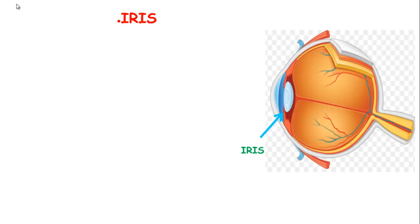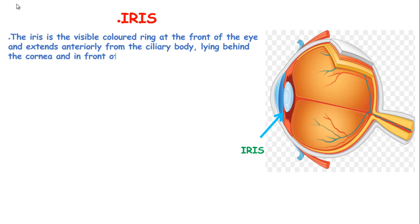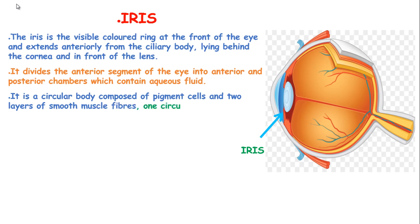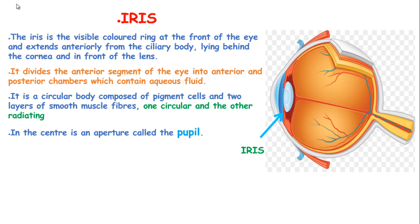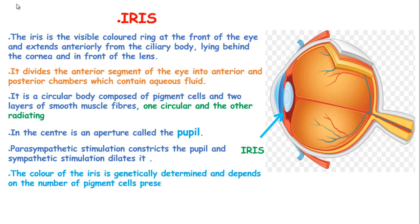The iris is a visible colored ring at the front of the eye, extending anteriorly from the ciliary body, lying behind the cornea and in front of the lens. It divides the anterior segment of the eye into the anterior and posterior chambers, which contain aqueous fluid. It is a circular body composed of pigment cells and two layers of smooth muscle fibers — one circular layer and one radiating layer. In the center there is an aperture known as the pupil. Parasympathetic stimulation constricts the pupil and sympathetic stimulation dilates it. The color of the iris is genetically determined and depends on the number of pigment cells present.